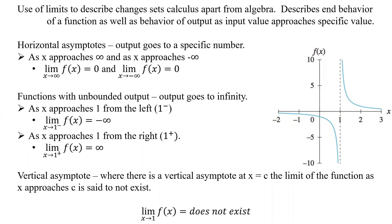So we're taking the limit of f(x) as x approaches 1 from the left — that goes to negative infinity. And as x approaches 1 from the right, the limit of f(x) goes to positive infinity. We're looking at the end behaviors and how the function works in the middle, and we can describe that with limits.